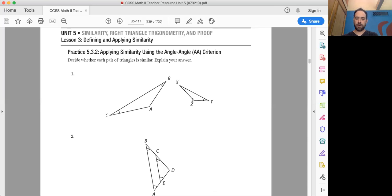So first just look at number one. We have here two triangles. Now applying similarity using the angle-angle criteria. So these criteria, there's ways that we can find and figure out if these two triangles are similar.